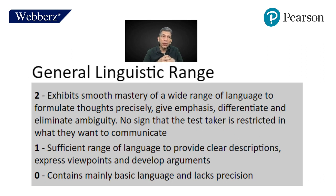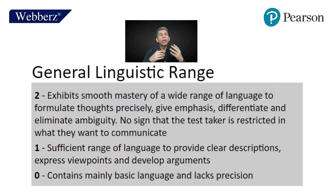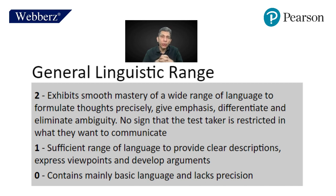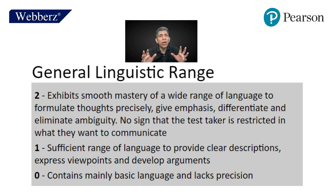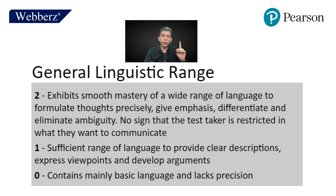General linguistic range refers to how smoothly you reduce confusion in the essay. You get two if there is smooth mastery. You get one if there is some range but clear-cut expressions are not there, viewpoints are not clear, and arguments are not developed. You get zero if the basic language lacks precision.